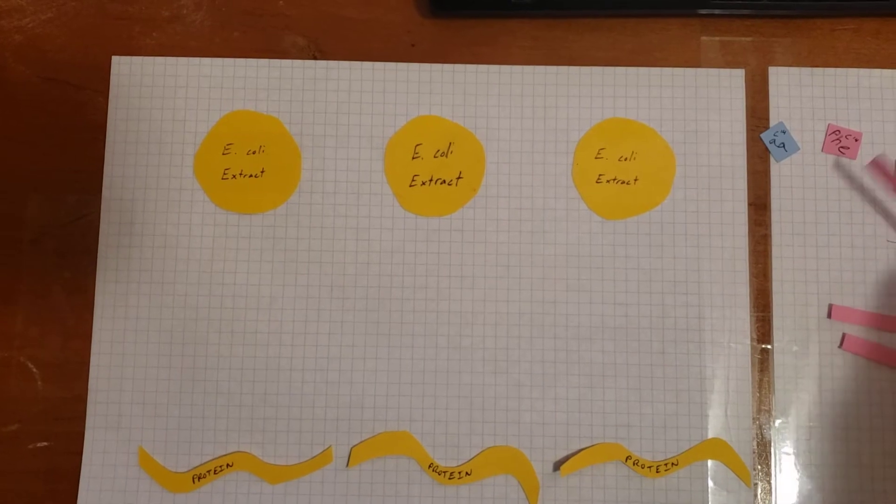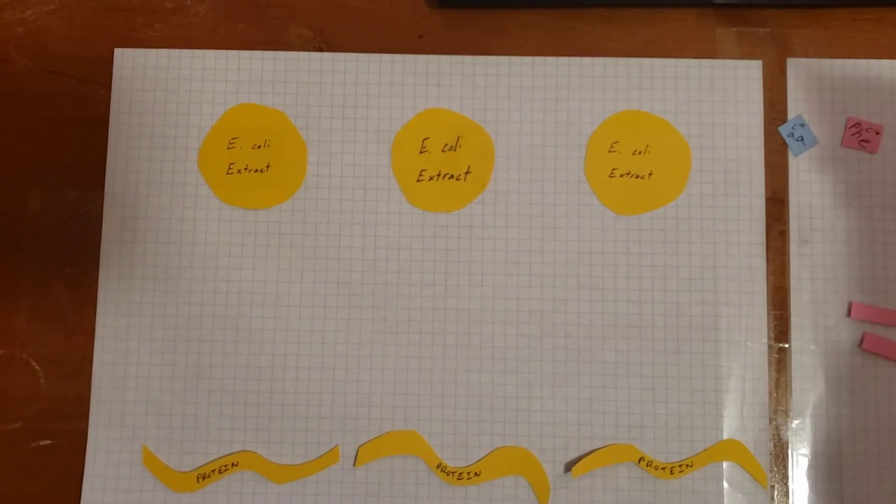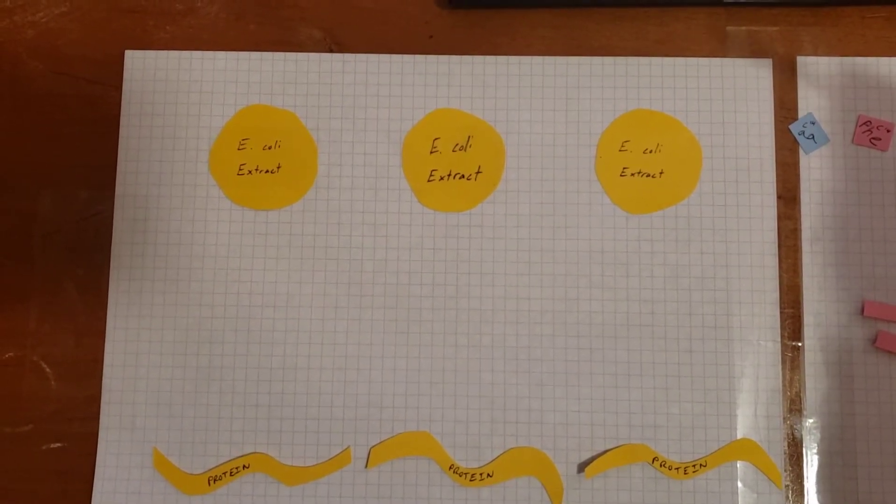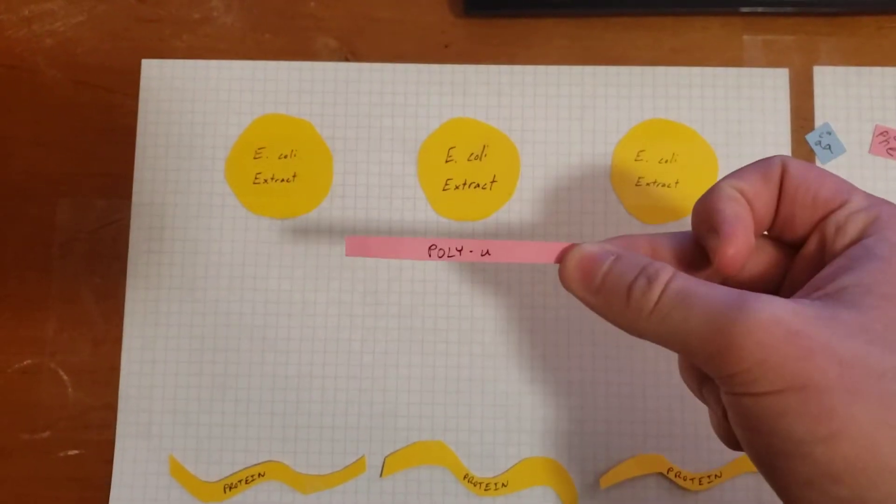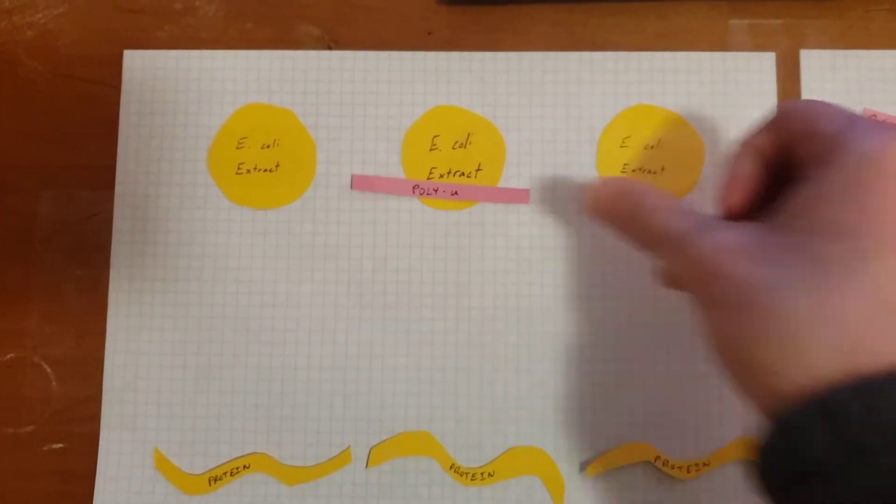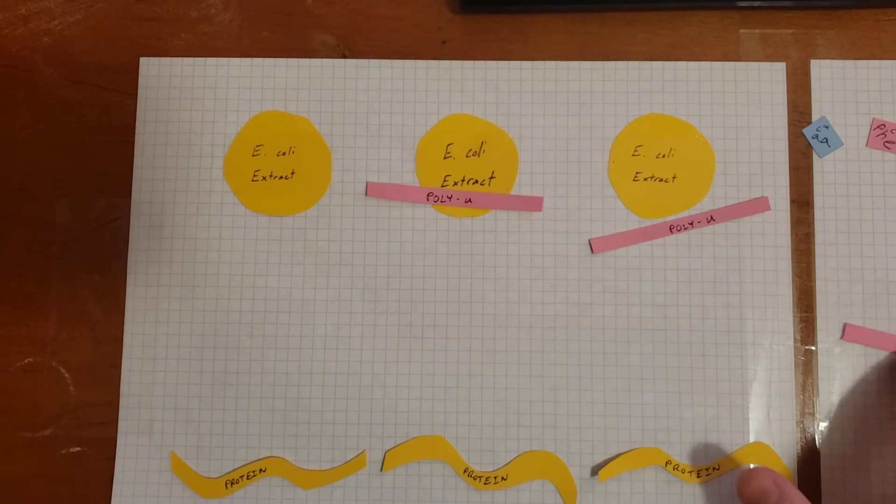Now they had to know what order of the mRNA, what base pairs were in the mRNA they were using, and the easiest way to do that is just make it all one type, all uracil. They made polyuracil and they put it in each of the systems.